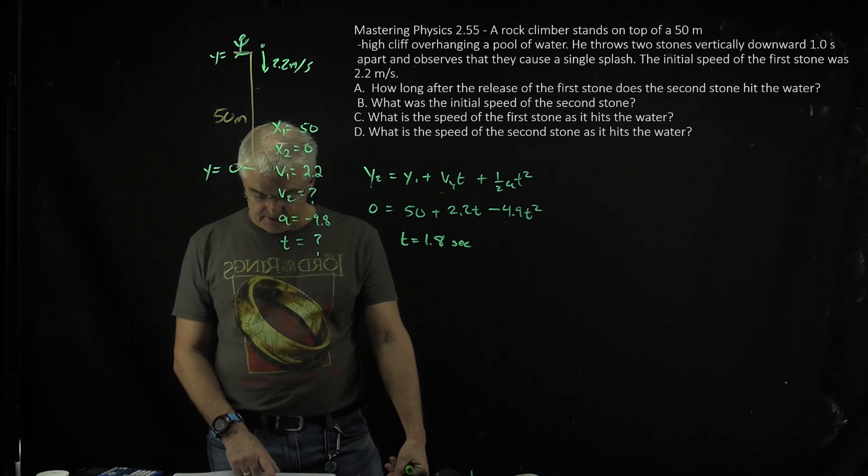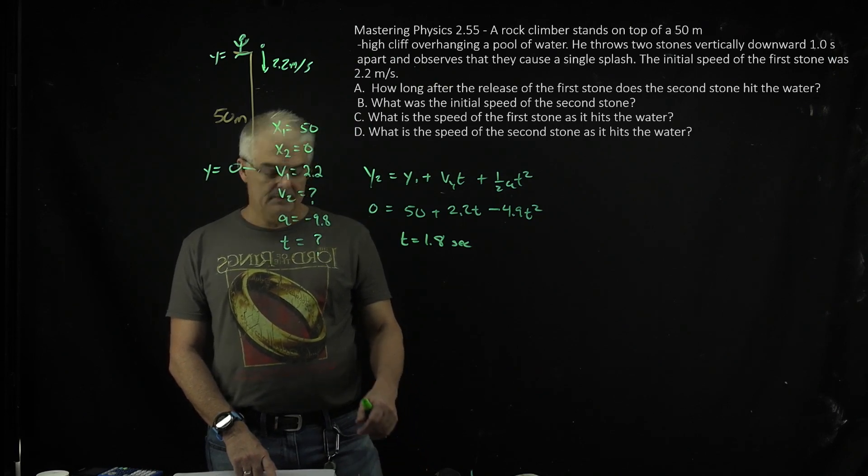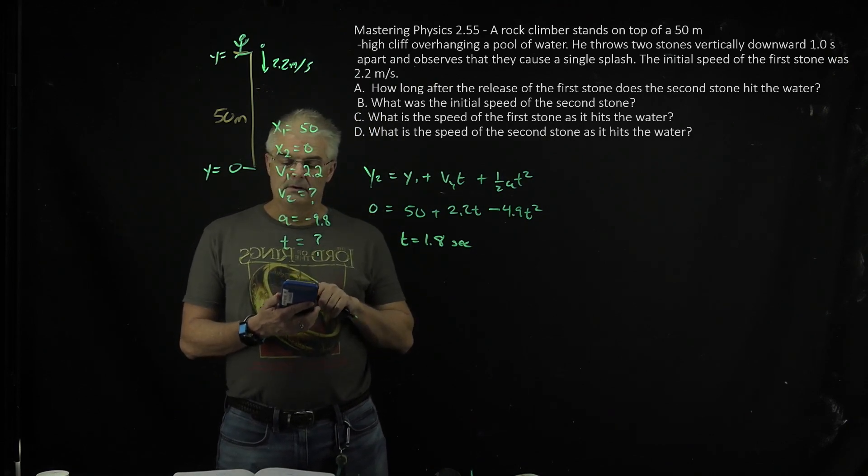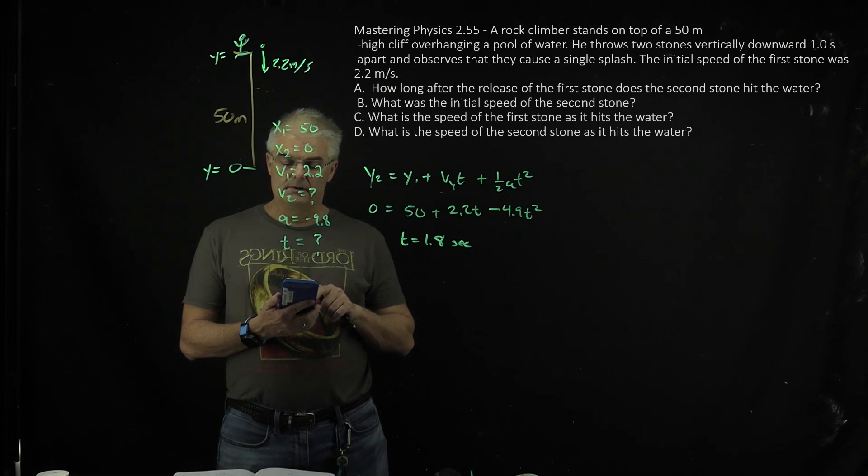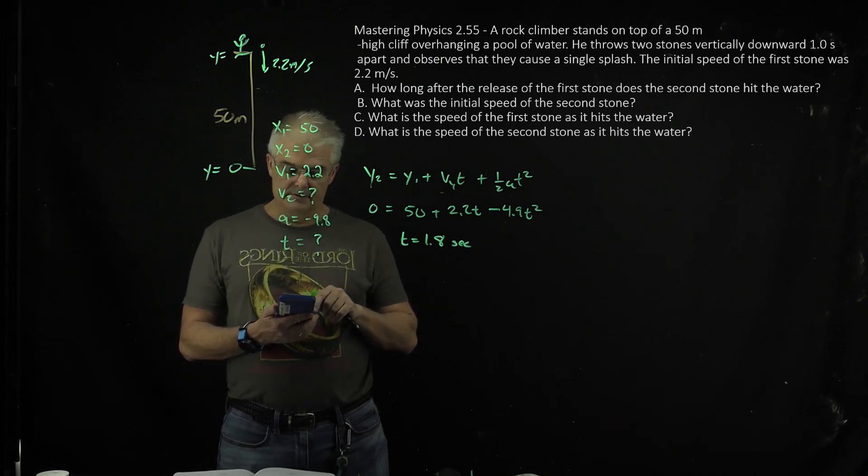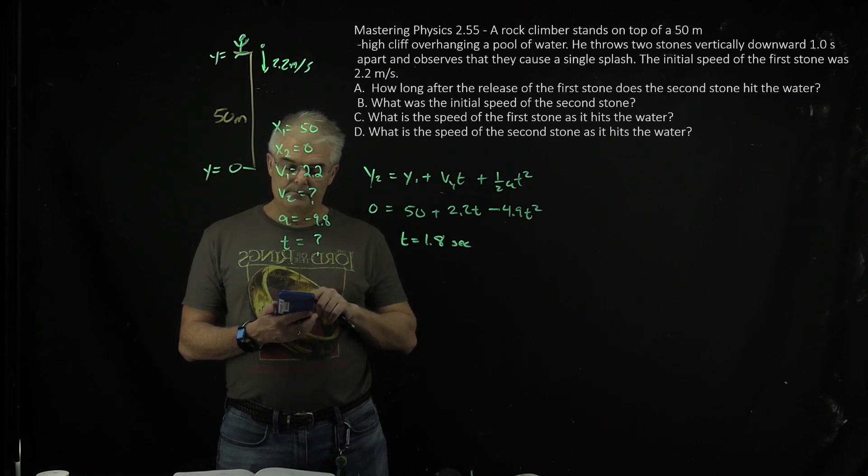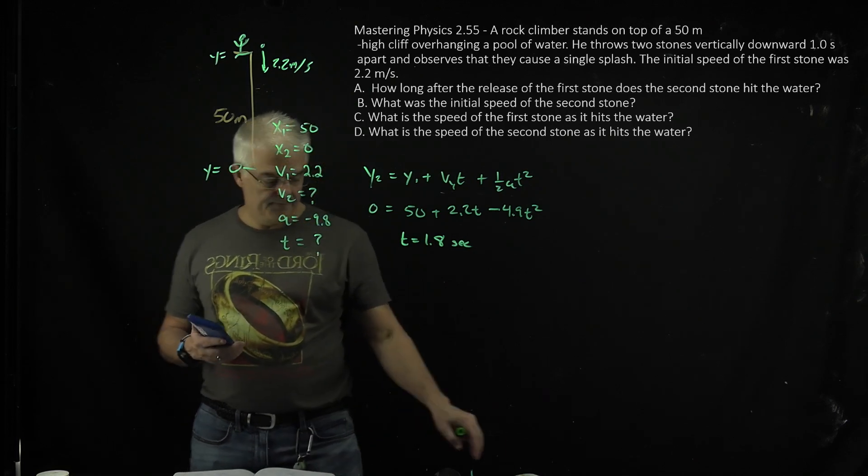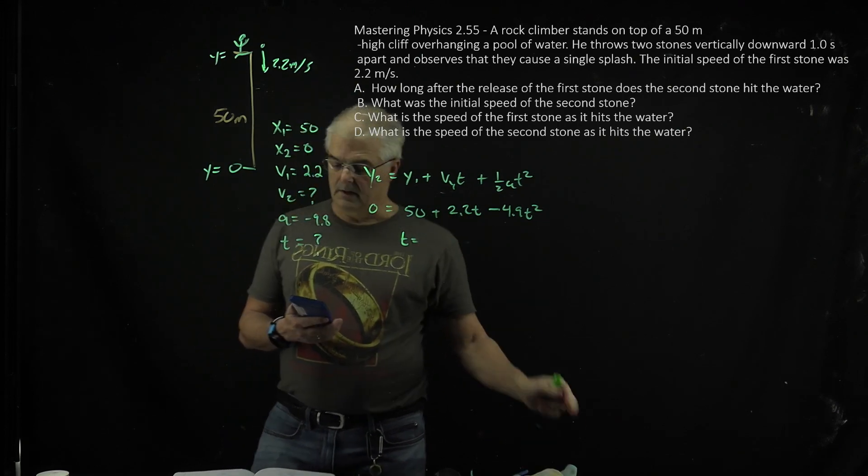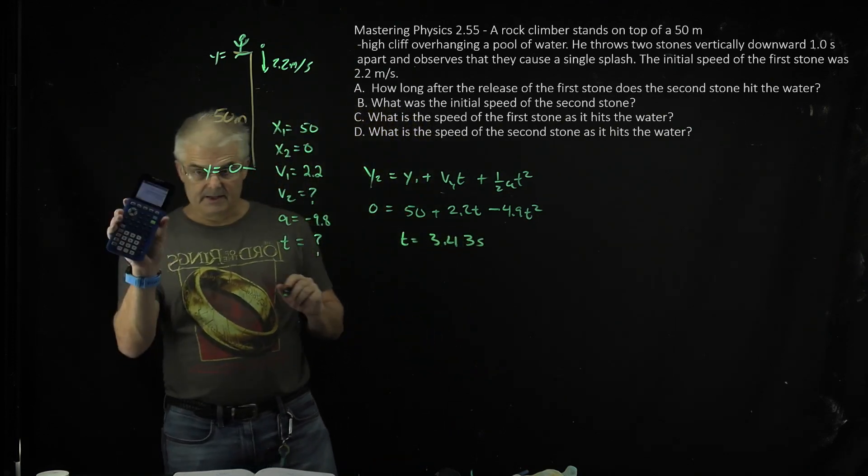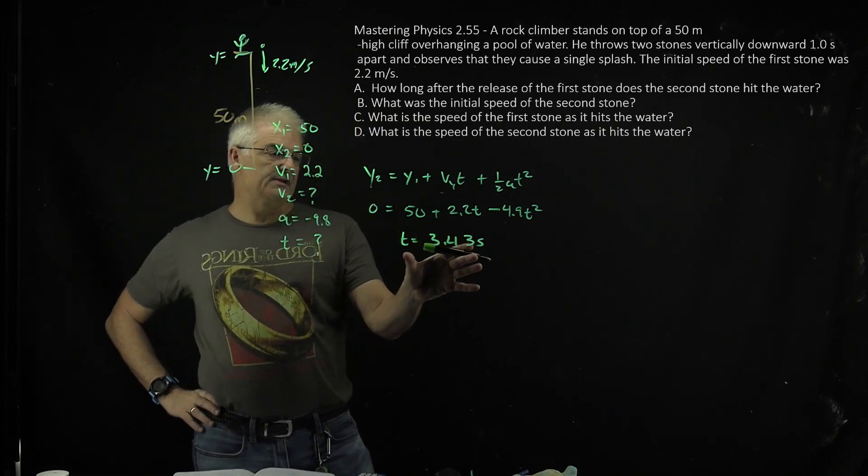So for the second stone, what I have to do... that doesn't look right. So I do this, I got four seconds. Oh, I see what I did wrong. I have an extra squared going on here. All right, so this equals actually 3.4 seconds. 3.43 seconds. I had typed it wrong in my calculator. All right, on this one, so that's 3.4 seconds.